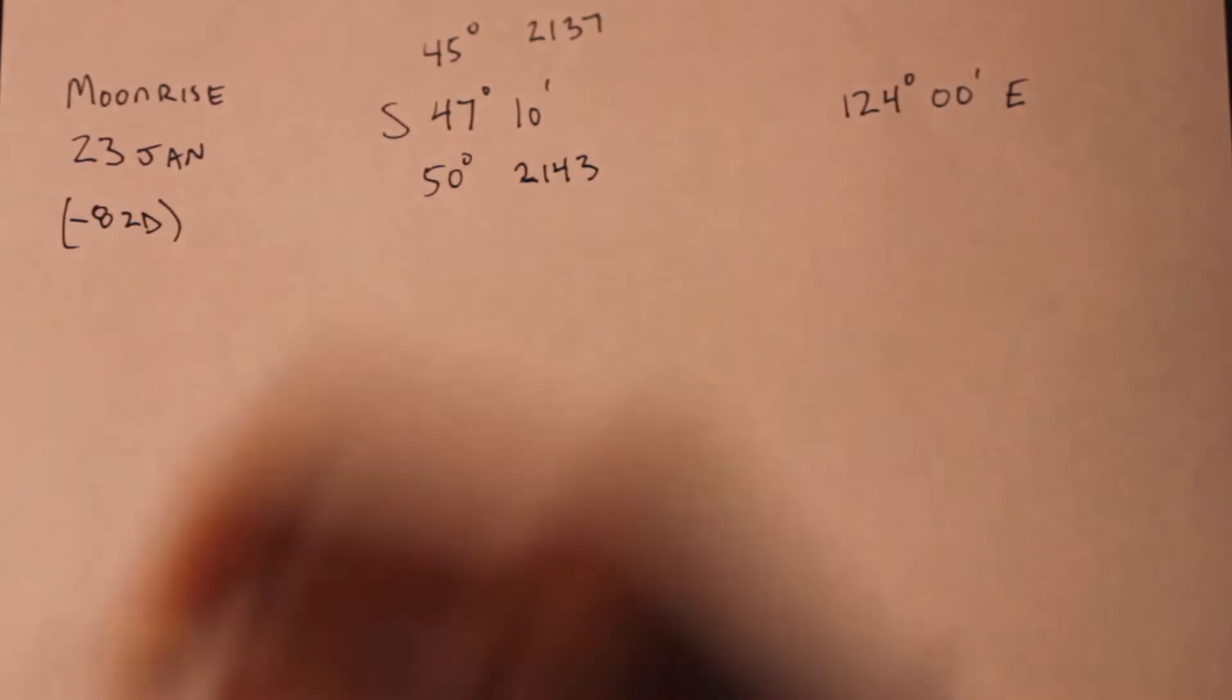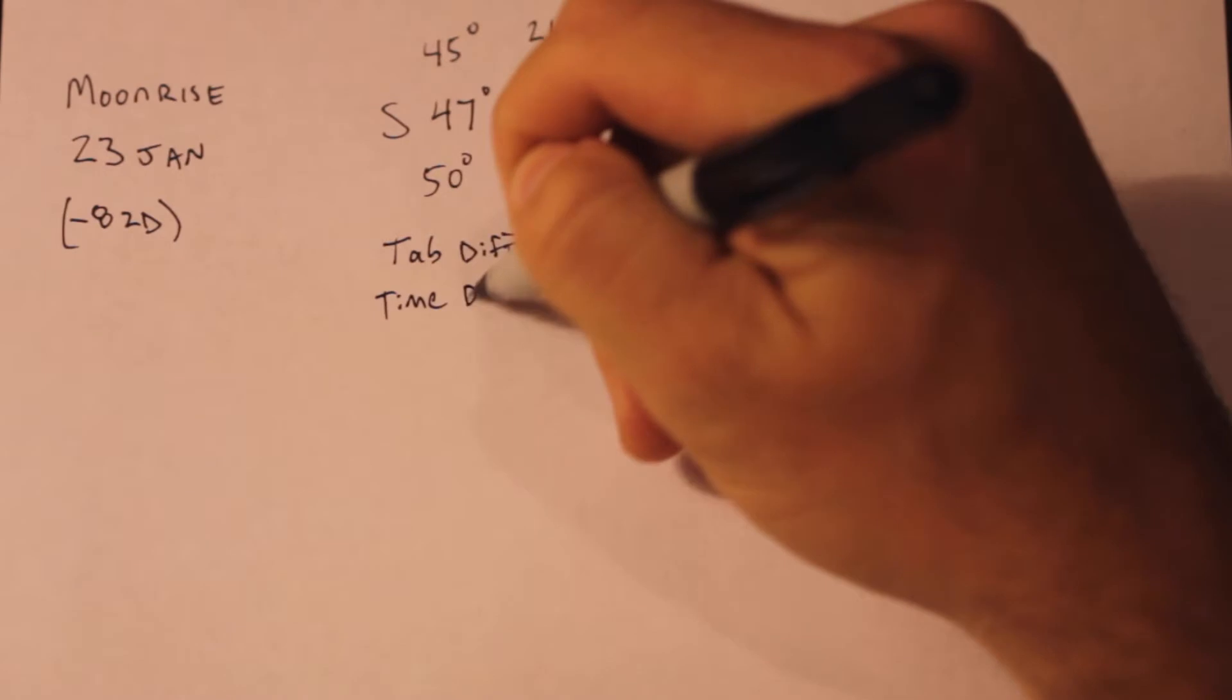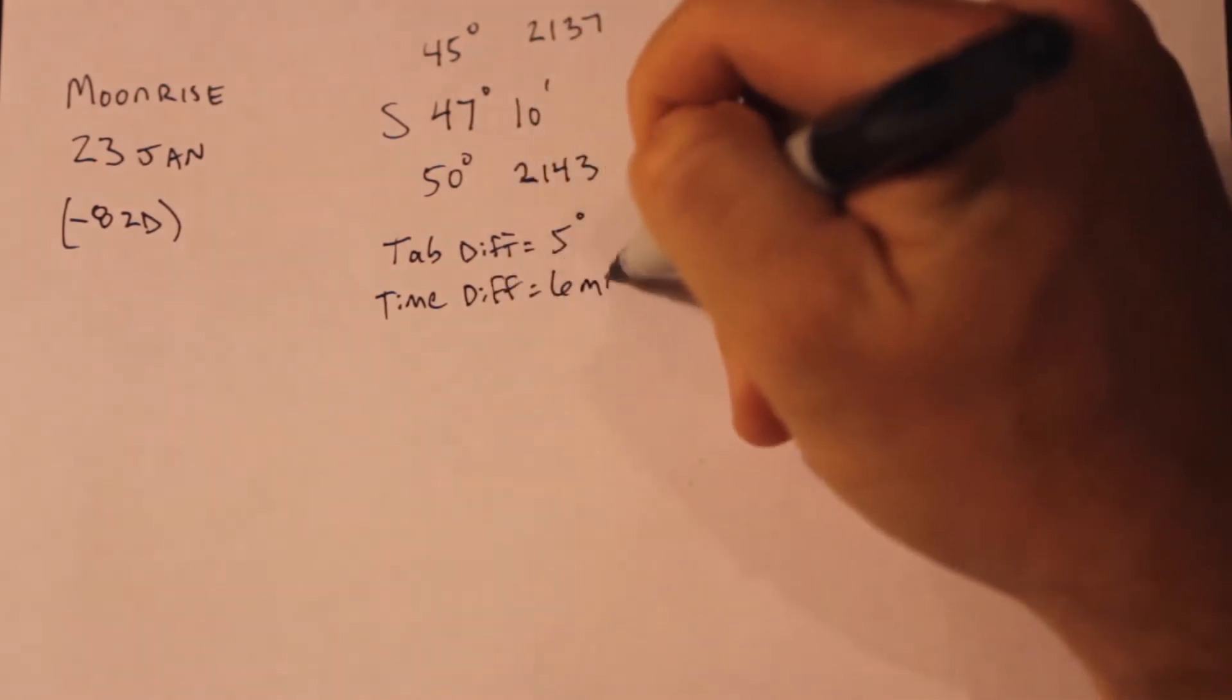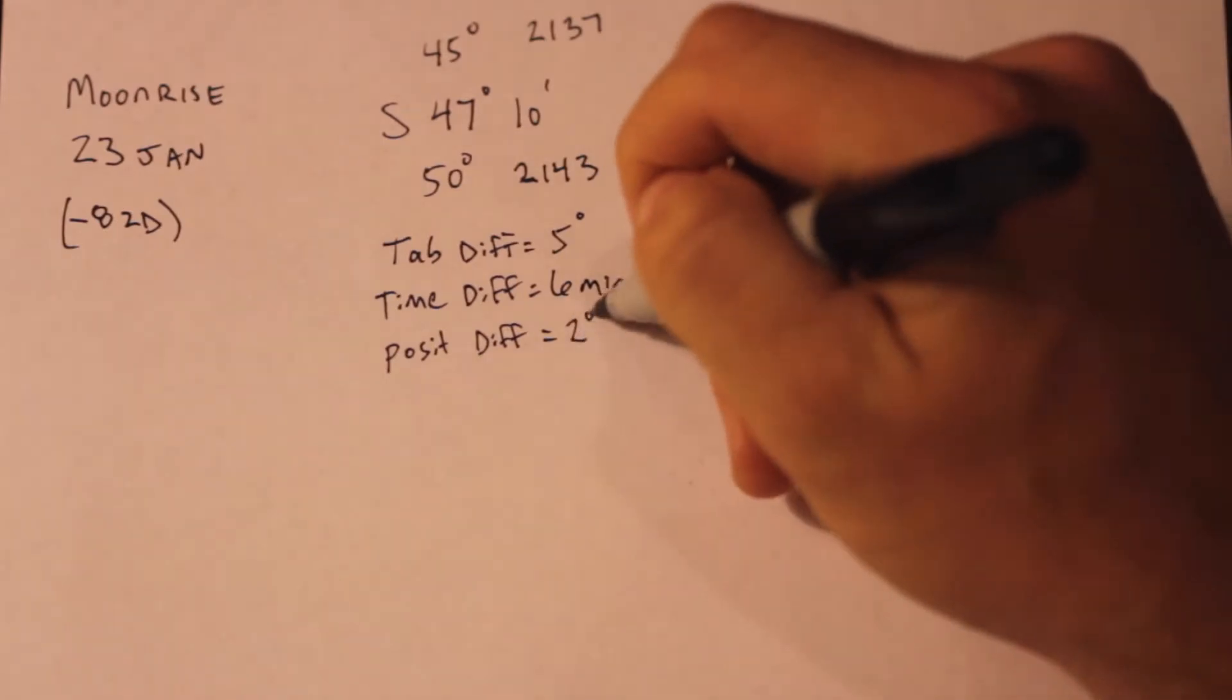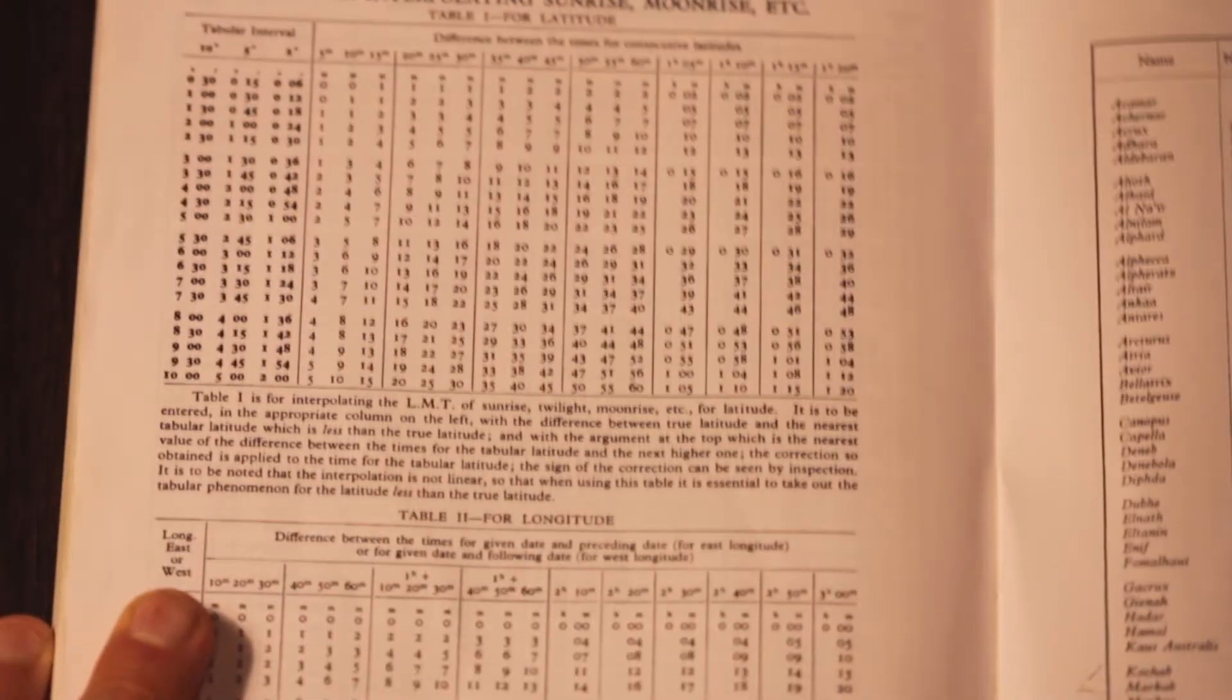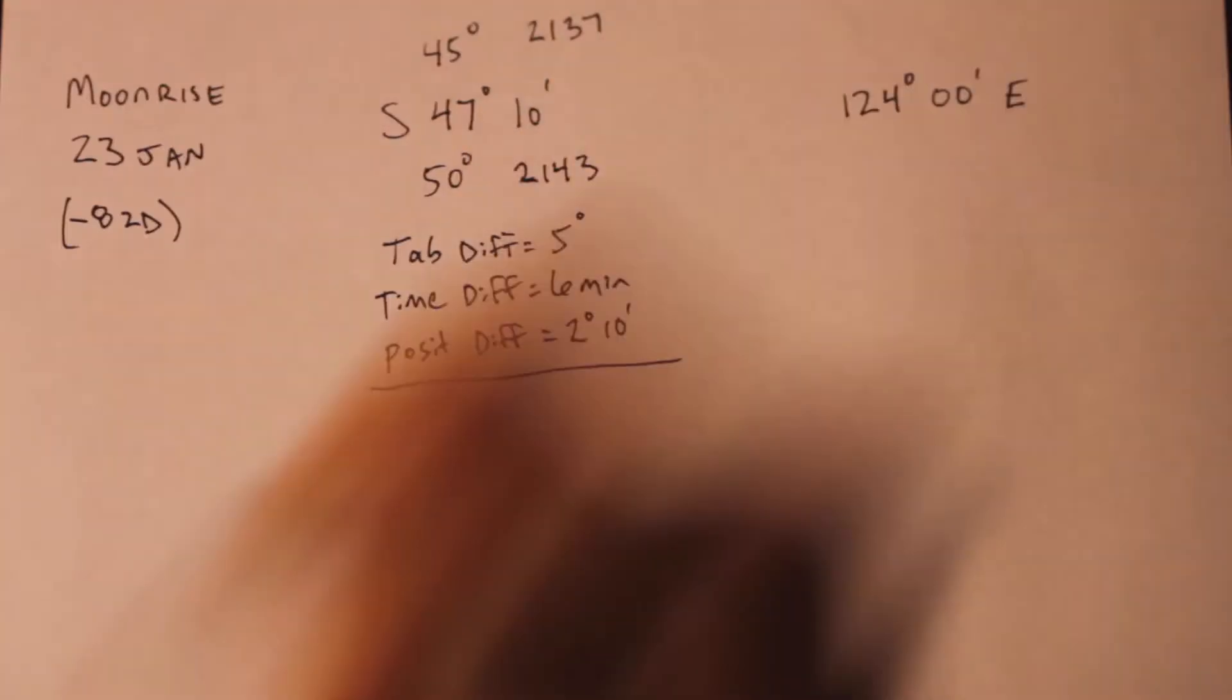We can pull the time of moonrise from the almanac using bracketing latitudes. Again, we're in the south, so pick the right values. That means we've got a tabular difference of 5 degrees, a time difference of 6 minutes, and a position difference of 2 degrees and 10 seconds for our desired position. Table 1 gives us a correction of about 2 minutes for these values.